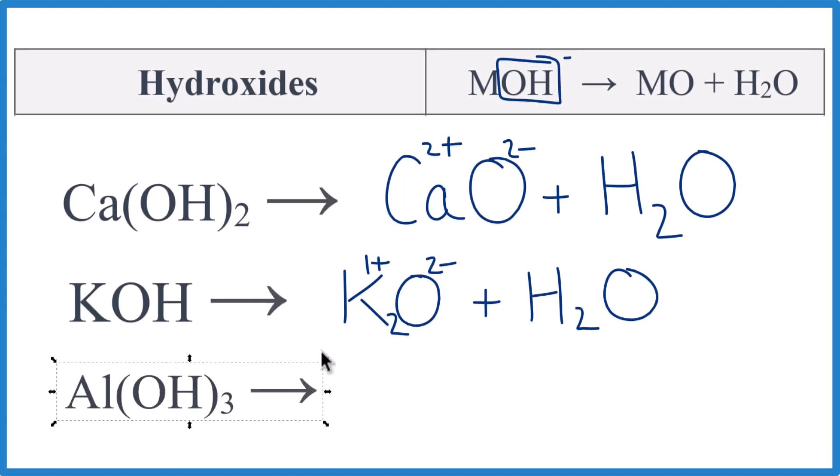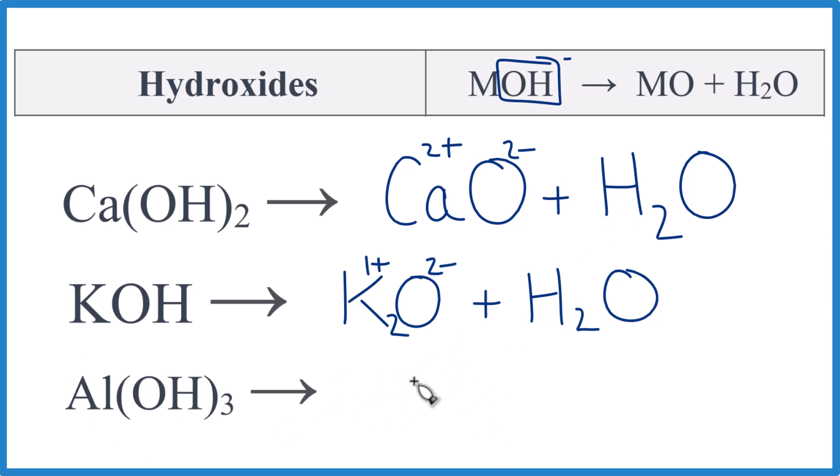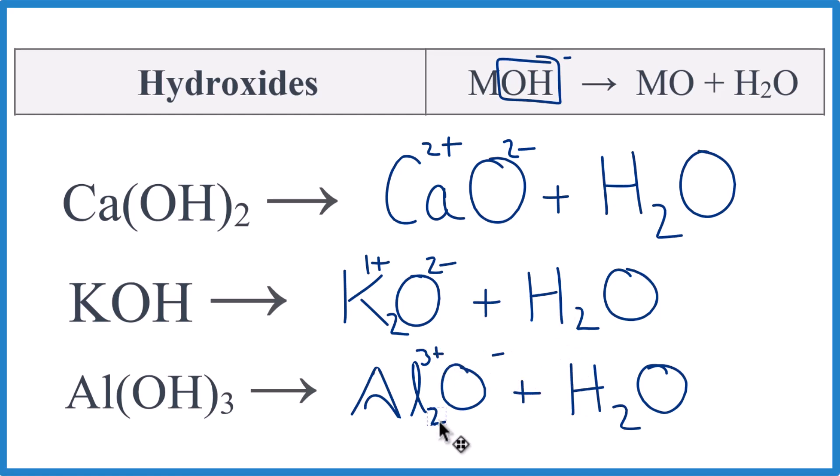All right, one last one. Predict the products here for the decomposition of aluminum hydroxide. Remember, aluminum, three plus. That's its ionic charge. So aluminum. And then we have oxygen. So AlO plus the water there. And then we've got to worry about charge. So aluminum is three plus. Oxygen is two minus. Let's just cross them. So now the charge cancels out. And that's the products of this hydroxide decomposing.